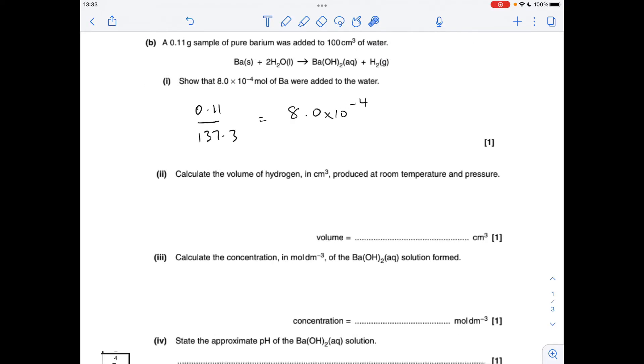Moving on to part B, the first thing we've got to do is show that that many moles of barium was added to the water, so it's literally just mass over MR, and we do indeed get 8 times 10 to the minus 4.